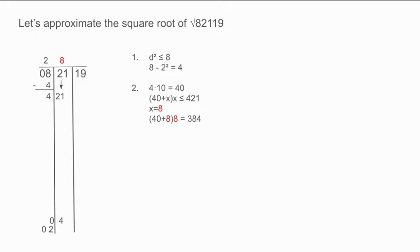x equals 8 is the number we are looking for, as x equals 9 is too large. 40 plus 8 times 8 is equal to 384. Place 8 above the columns. Subtract 421 minus 384 which is equal to 37. Place the 37 in the middle column. Place the 8 beside the 8 at the bottom of the column. Double the last digit and write 56 in the bottom column shifted one spot over. The number at the bottom, 56, is always going to be twice the integer.